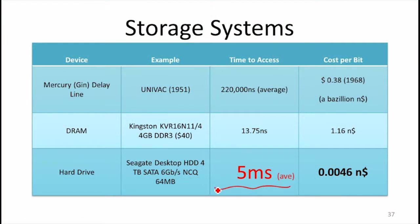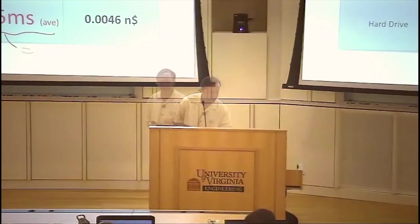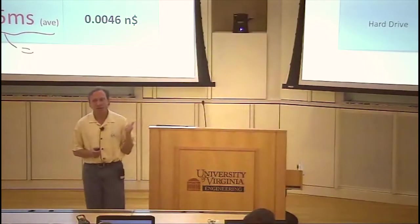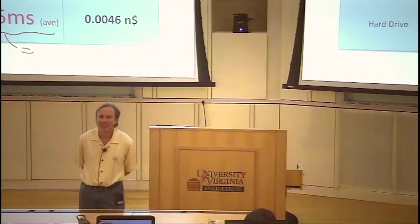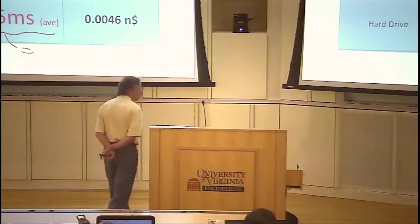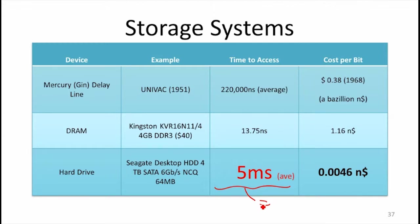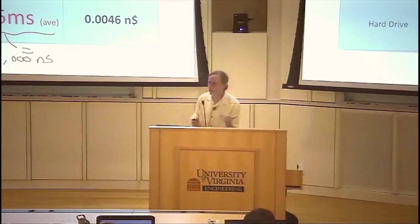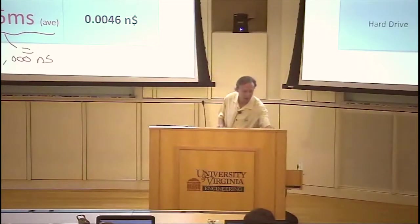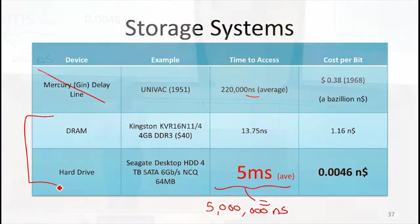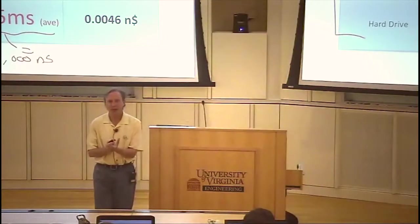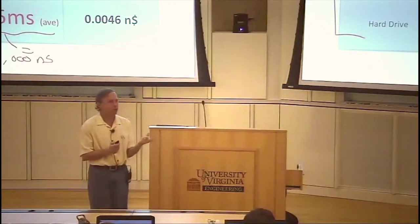The latency is about 5 milliseconds — that's 5 million nanoseconds. So it's much slower than the mercury delay lines Turing was working with, but much, much cheaper. Let's assume our storage systems are DRAM and a disk drive. The goal of the operating system is to provide a nice abstraction for programs to access storage, and we're going to start talking about those storage abstractions now.